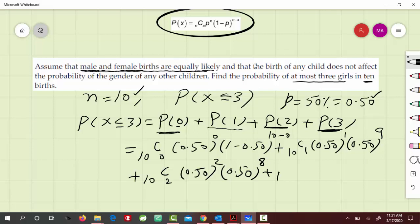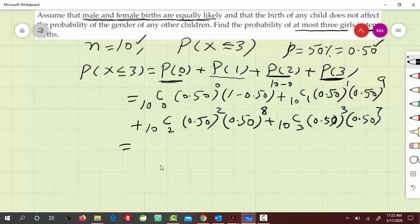Then plus for P(3), that is 10 choose 3, 0.50 to the 3, times 1 minus 0.50, which is 0.50 to the 7. Now this will simplify. So 10 choose 0 is 1, 1 times 0.50 to the 0, and then this is to the 10, so this simplifies into 0.50 to the 10.